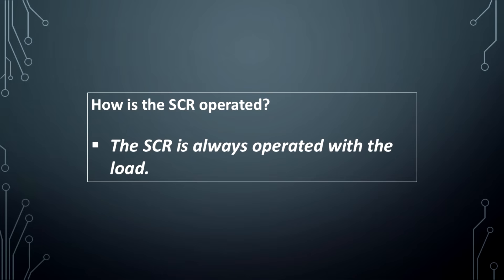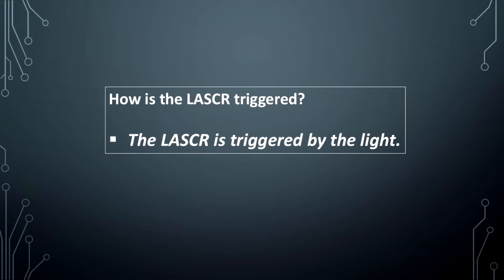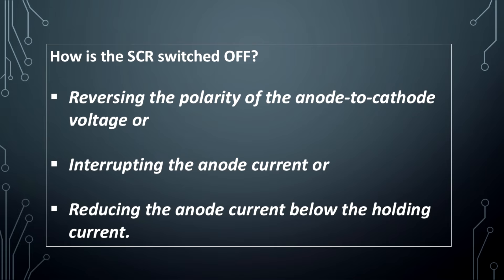How is the SCR operated? The SCR is always operated with a load. How is the LASER triggered? The LASER is triggered by light. How is the SCR switched off? By reversing the polarity of the anode-to-cathode voltage, or interrupting the anode current, or reducing the anode current below the holding current.